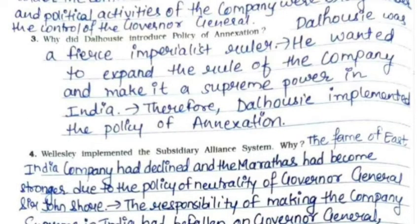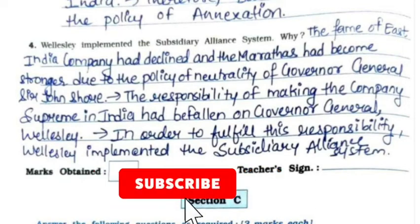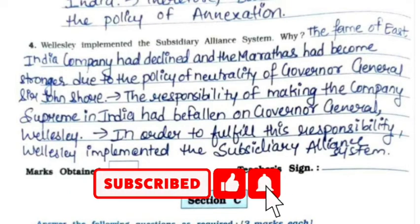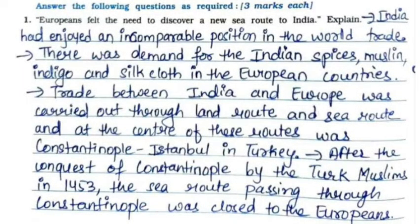Third: Why did Dalhousie introduce the policy of annexation? Dalhousie was a fierce imperialist ruler who wanted to expand the rule of the company and make it a supreme power in India; therefore, he implemented the policy of annexation. Fourth: Why did Wellesley implement the Subsidiary Alliance System? The fame of the East India Company had declined and the Marathas had become stronger due to the policy of neutrality of Governor General Sir John Shore. The responsibility of making the company supreme had fallen on Wellesley, and to fulfill this he implemented the Subsidiary Alliance System.